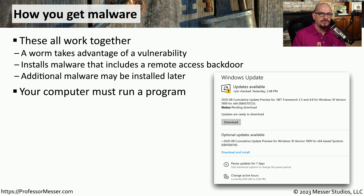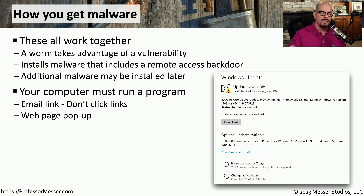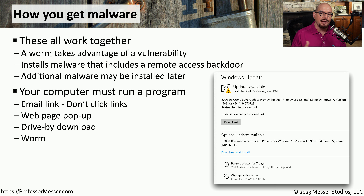For malware to infect your system, it has to somehow find a way to run on your computer. Normally, this would be something that you might click in your email message that then loads the malware into memory and uses the CPU of your system to execute. Or maybe it's a pop-up message that you receive when you visit a website. You might also see that information is automatically downloaded into your system without you clicking on anything — we refer to these as drive-by downloads. Although they are relatively rare, there are still instances where a worm may be able to automatically propagate itself between systems using a known vulnerability.